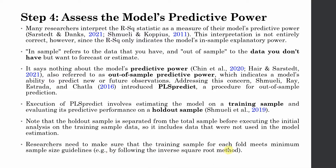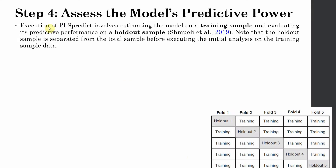Researchers need to make sure that the training sample has adequate sample size — for example, by looking into the inverse square root method discussed in the book and earlier videos. Execution of PLS-Predict involves estimating the model on the training sample and evaluating its predictive performance on the hold-out sample. The hold-out sample is separated from the total sample before executing the initial analysis, and this separation happens through a random process.